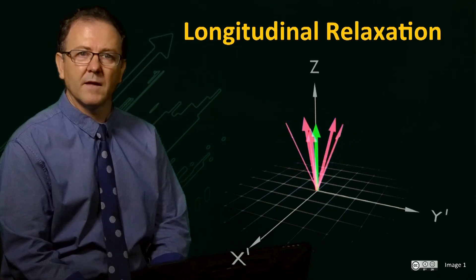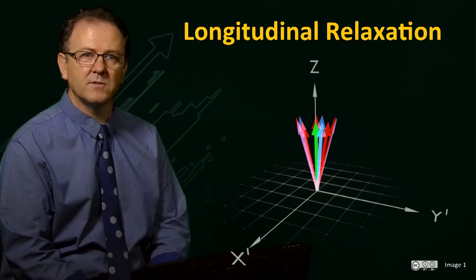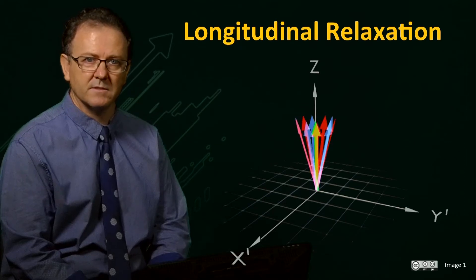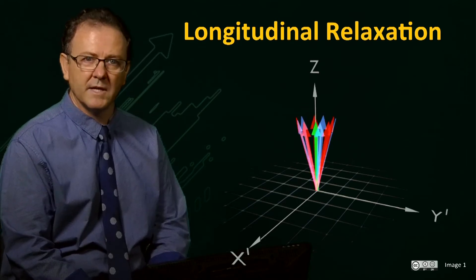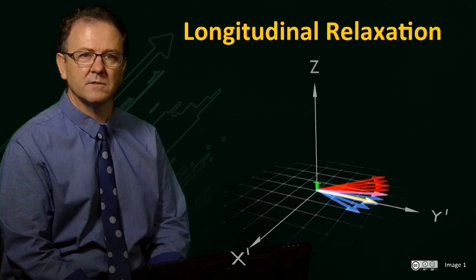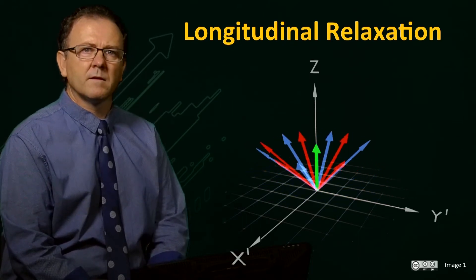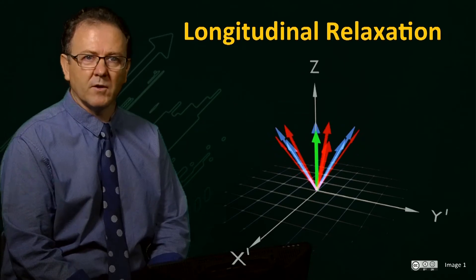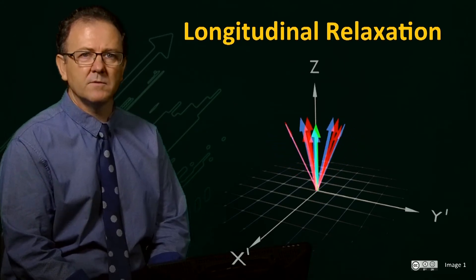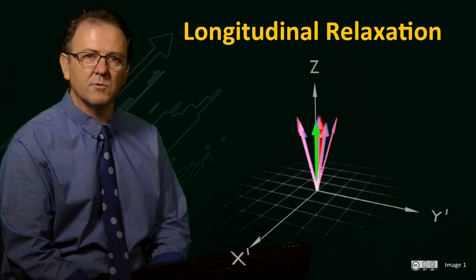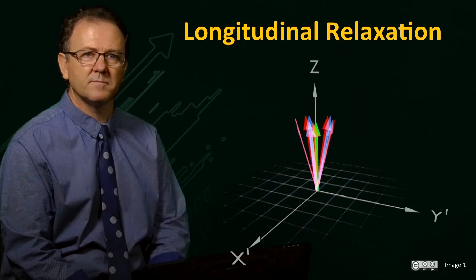At the same time, the vectors begin to realign along the Z-axis, and the longitudinal or Z-magnetization increases, indicated here by the green arrow. Once the vectors have reached their original equilibrium value, the net magnetization has fully recovered along the Z-axis.